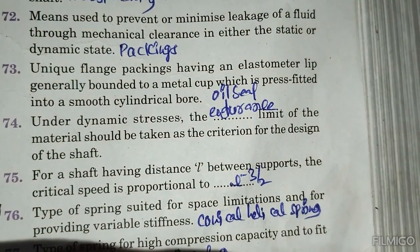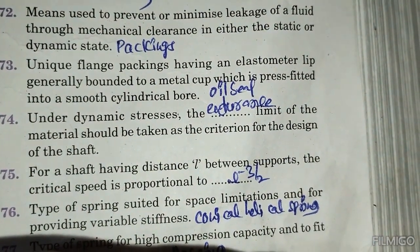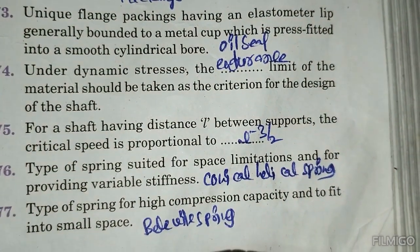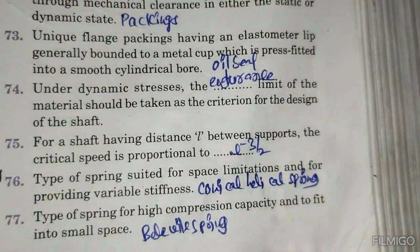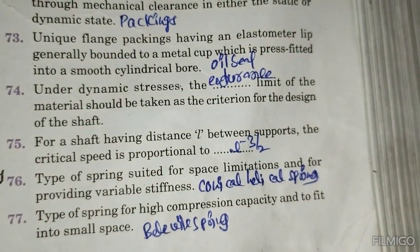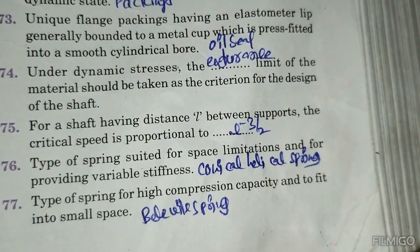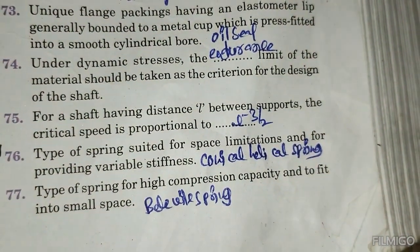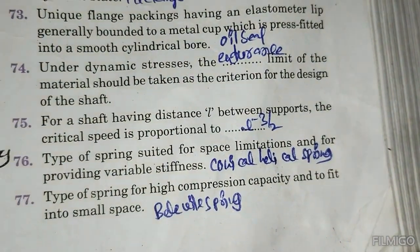Under dynamic stress, the endurance limit of the material should be taken as the criterion for the design of a shaft. For a shaft having distance L between supports, the critical speed is proportional to L to the power of minus 3/2. A type of spring suited for space limitations and providing variable stiffness is the conical helical spring. A type of spring for high compression capacity in a small space is the Belleville spring.